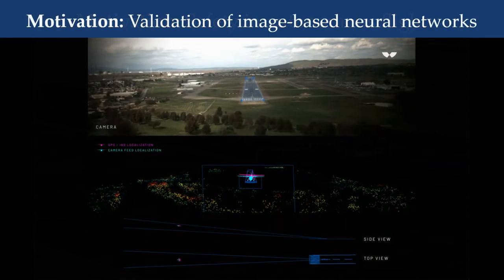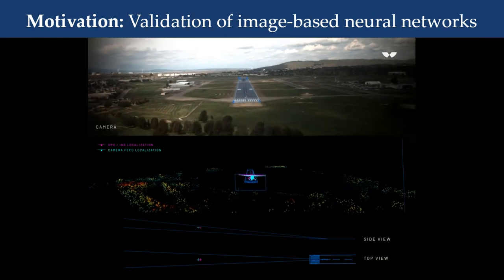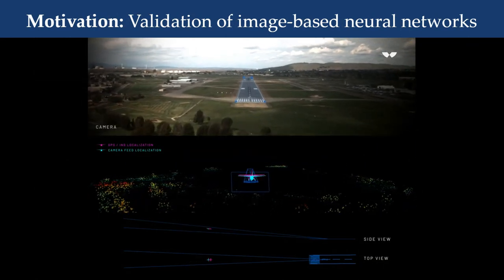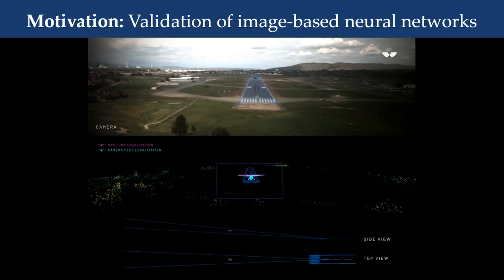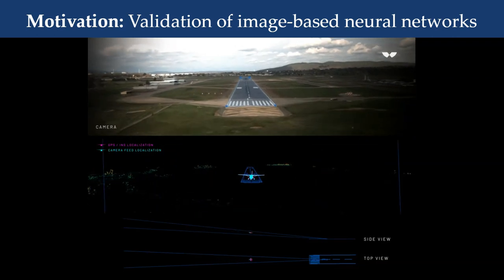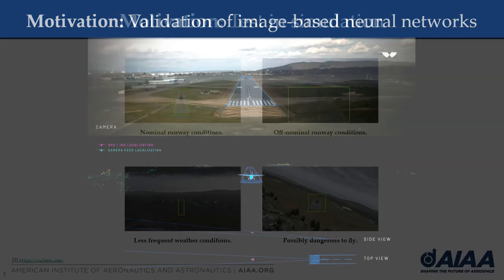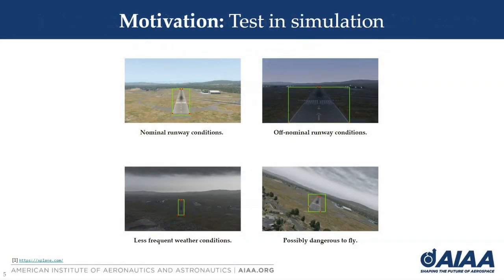Here's an example video showing the output of the neural network as it detects the runway on an approach to land. Testing that system based on runway images and videos can be difficult as we may not be able to fly all the scenarios we want to stress. So we rely on simulated tests using the X-Plane flight simulator, showing several different nominal and off-nominal cases and one potentially dangerous to fly scenario.